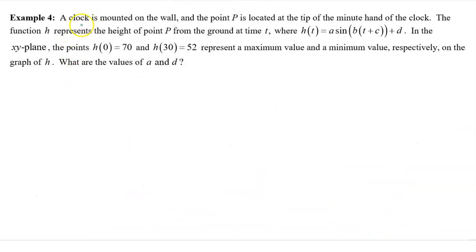Example 4: A clock is mounted on the wall, and the point P is located at the tip of the minute hand of the clock. The function h represents the height of point P from the ground at time t, where h(t) = a sin(b(t + c)) + d. In the xy plane, the points h(0) = 70 and h(30) = 52 represent a maximum value and a minimum value, respectively, on the graph of h. What are the values of a and d?